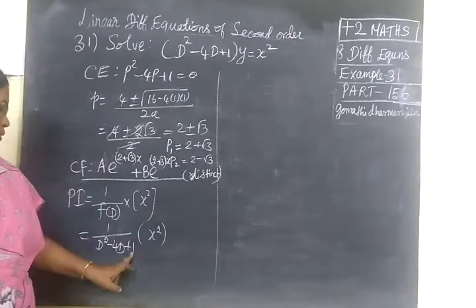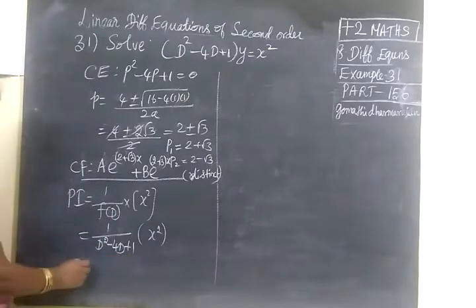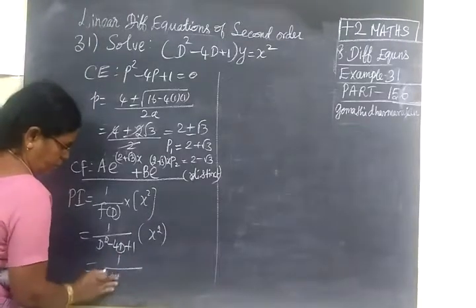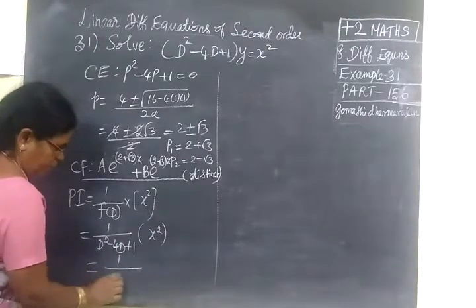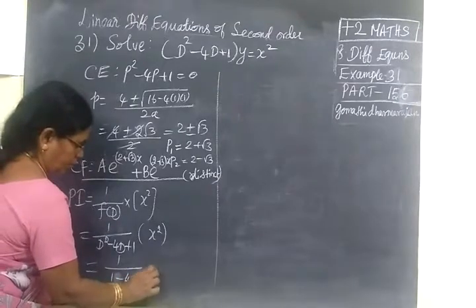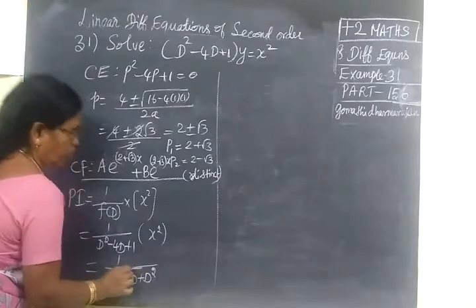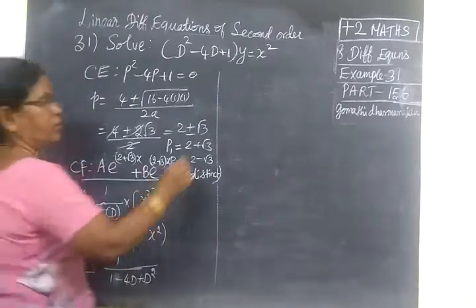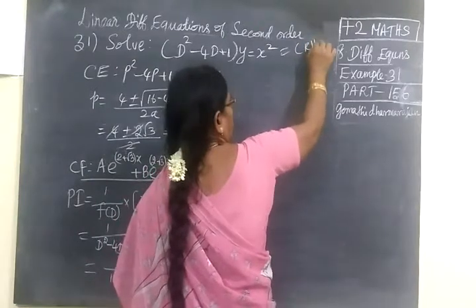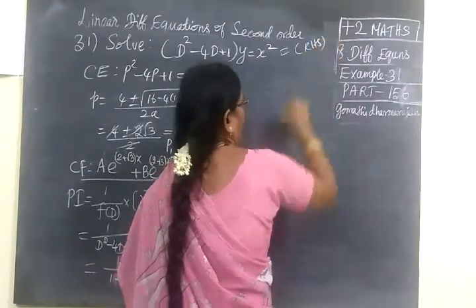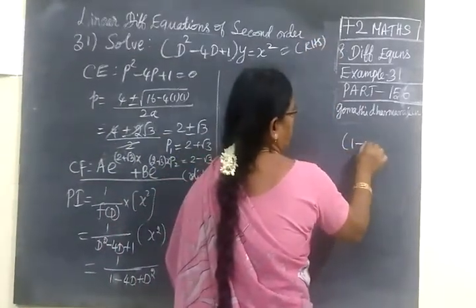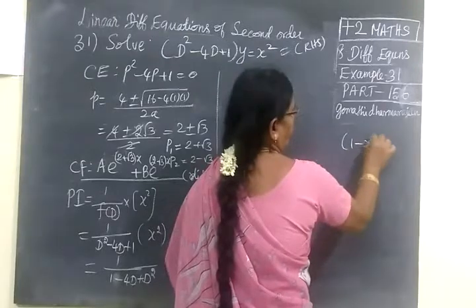Here we just reverse and rewrite as 1 over (1 minus 4D plus D squared). Since the right-hand side has x squared, we can use the binomial expansion formula.